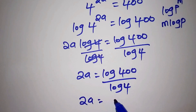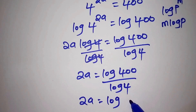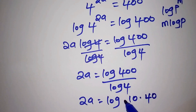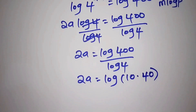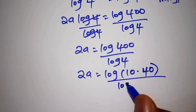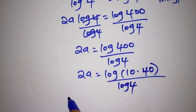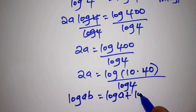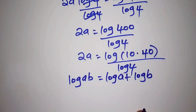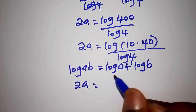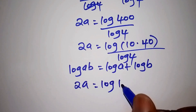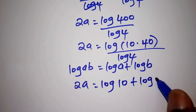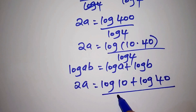So 2A is equals to: the log of 400 can be written as the log of 10 multiplied by 40, all over the log of 4. According to the law of logarithms, when you have the log of A multiplied by B, it can be written as the log of A plus the log of B. So we shall now have the log of 10 plus the log of 40, all over the log of 4.